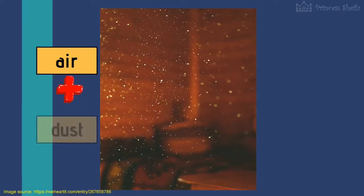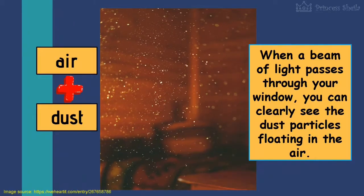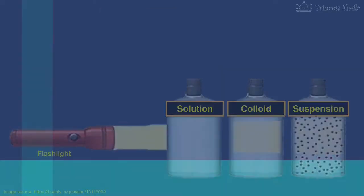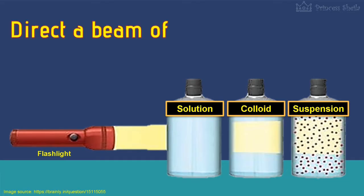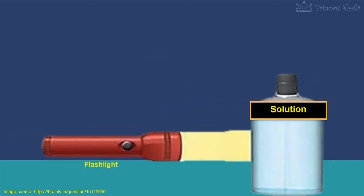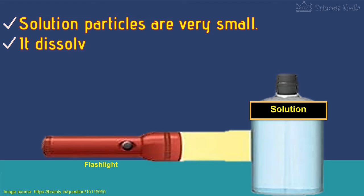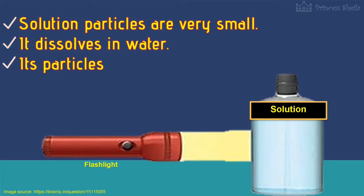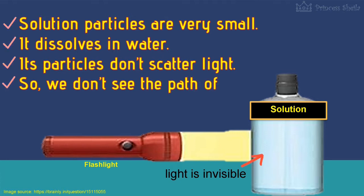Another example is air and dust. When a beam of light passes through, you can clearly see the dust particles floating in the air. For us to easily identify the classification of mixture, let us direct a beam of light through each mixture. First is the solution — solution particles are very small, it dissolves in water, and its particles don't scatter light, so we don't see the path of light.